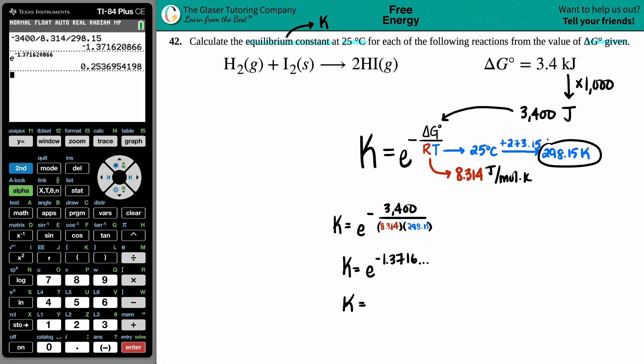For sig fig purposes, I had a lot of sig figs in my Kelvin value, but I only had two starting with my delta G. So my equilibrium constant should be two sig figs: 0.25, no units.